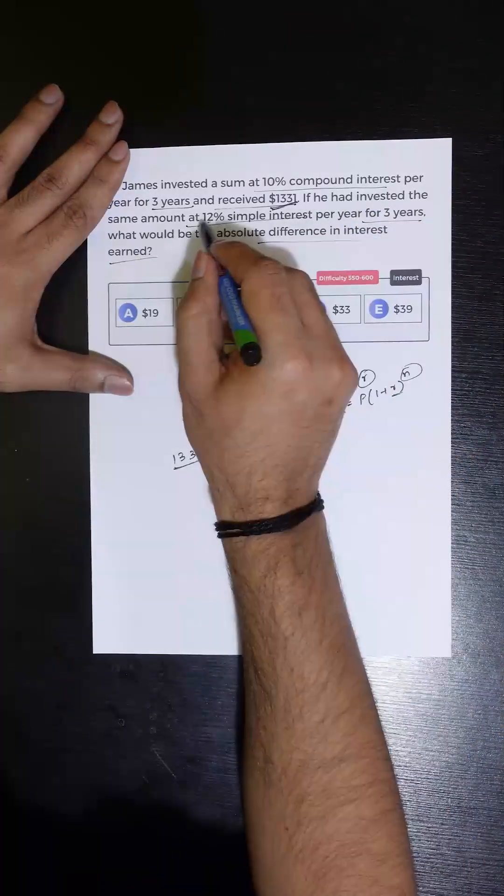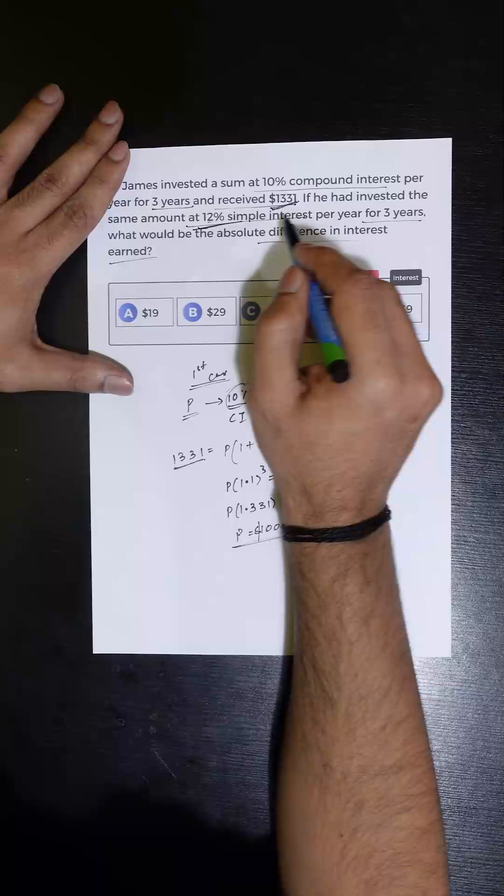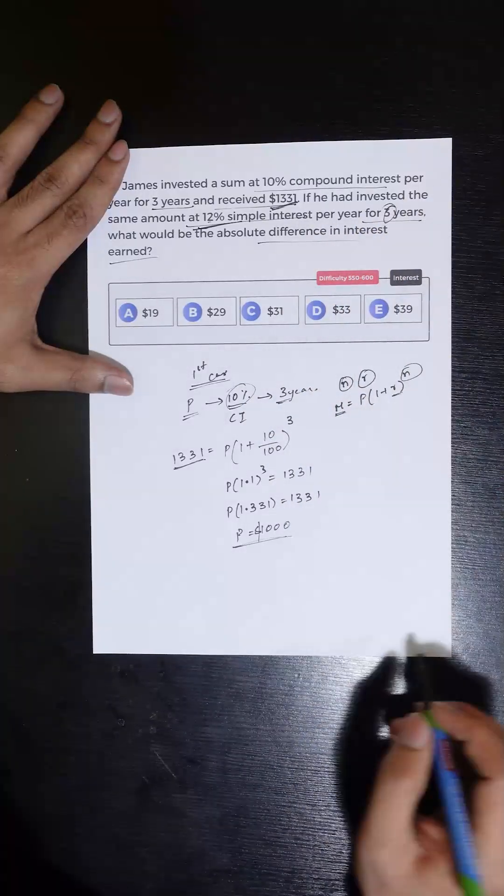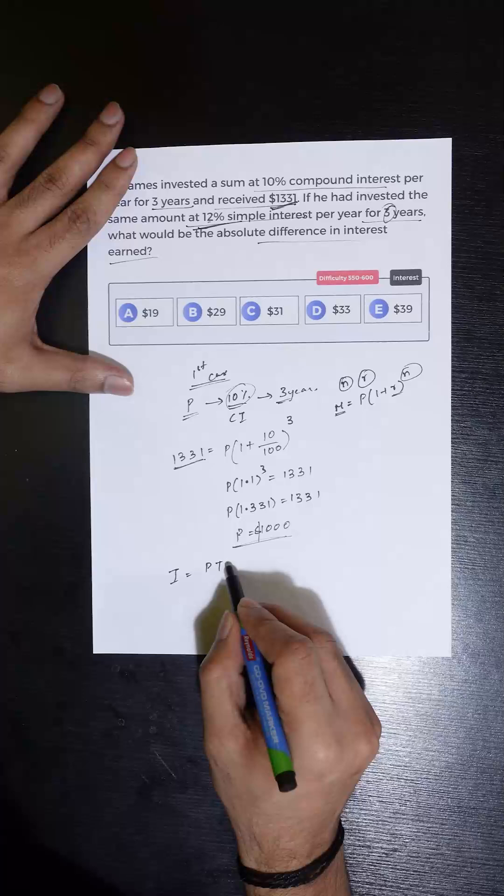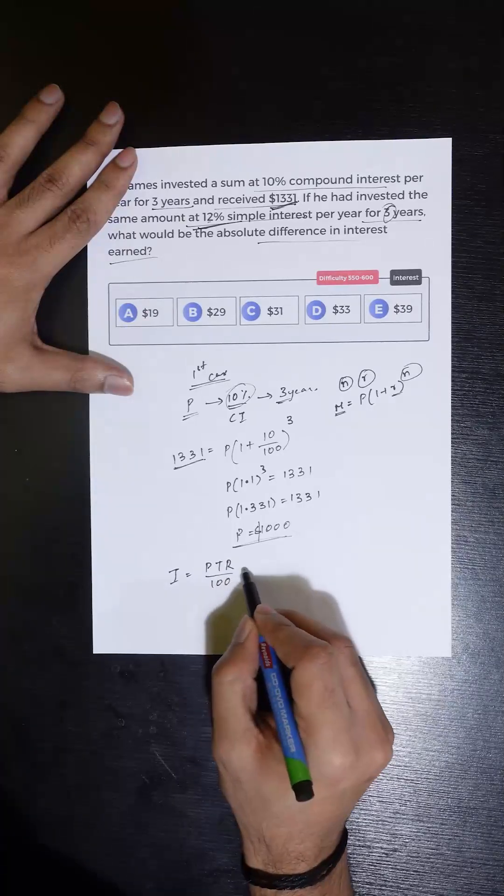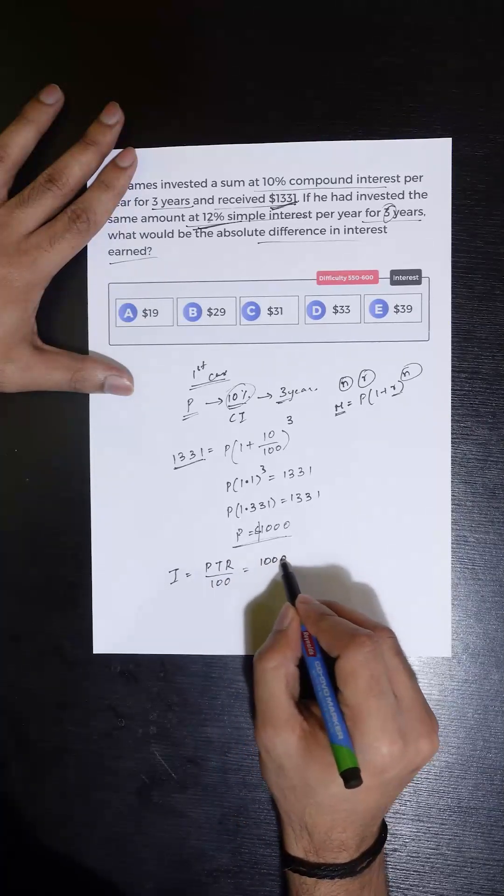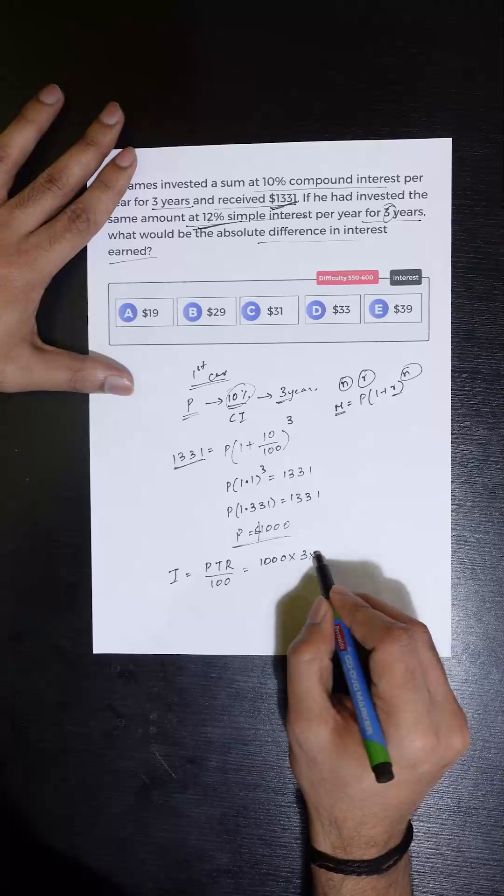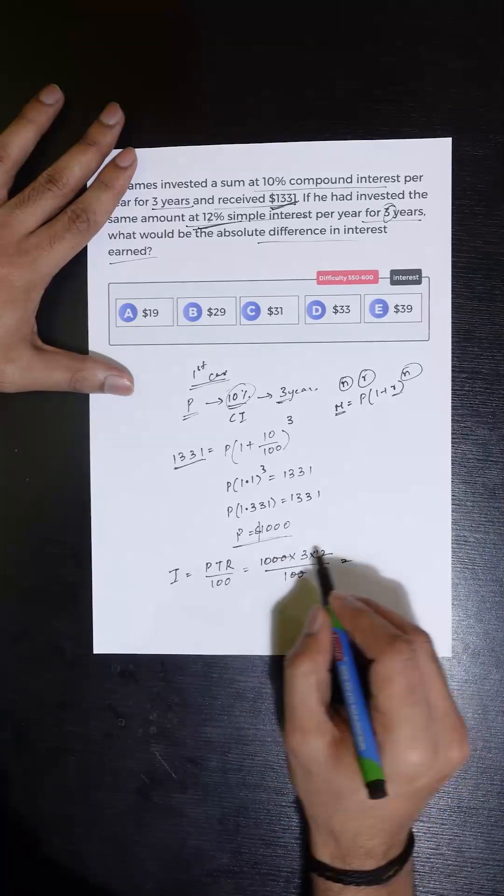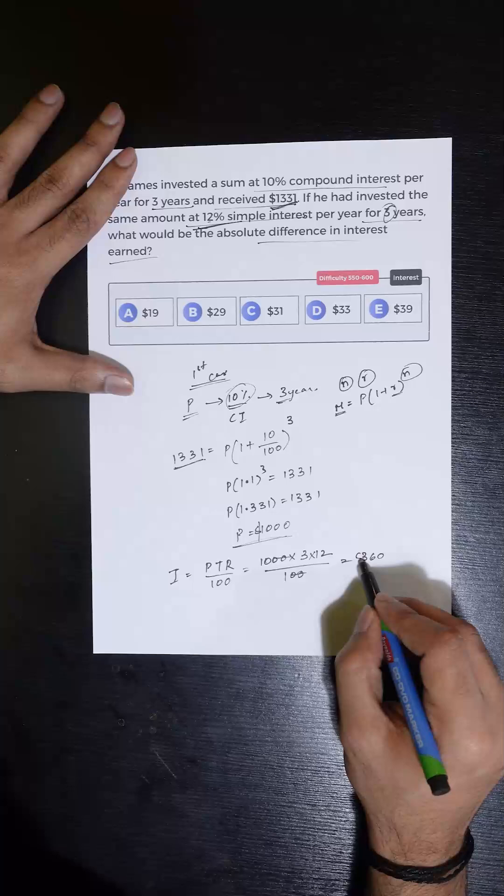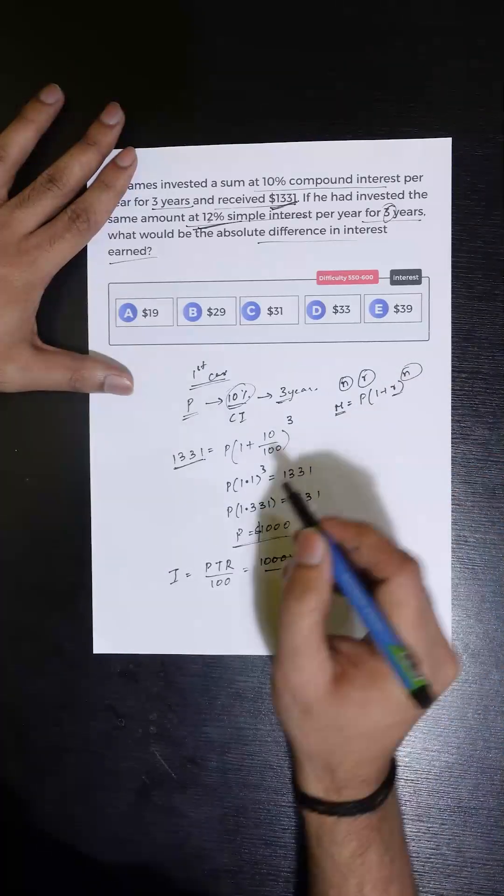Now in the second case, he is investing the same money at 12% simple interest for three years. So the interest after three years can be calculated using the formula PTR/100, which would be equal to 1000 times 3 times 12 divided by 100, which equals 360 dollars.